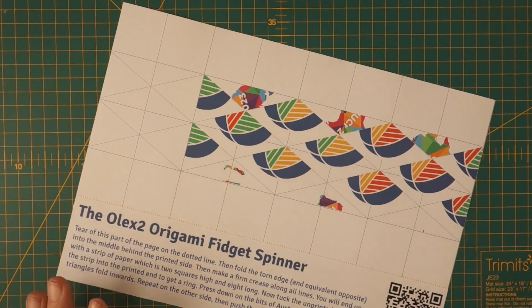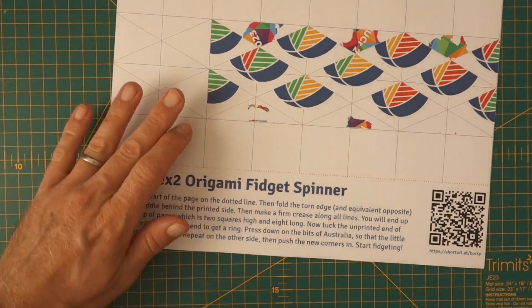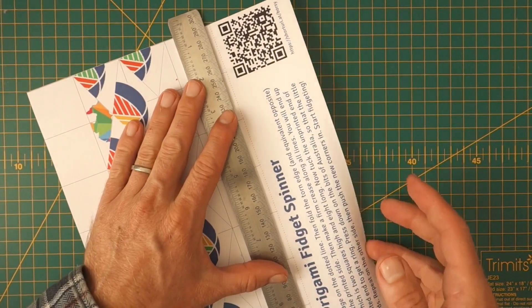Today I'll show you how to fold the Olex 2 origami fidget spinner. First of all, fold along the orange line.